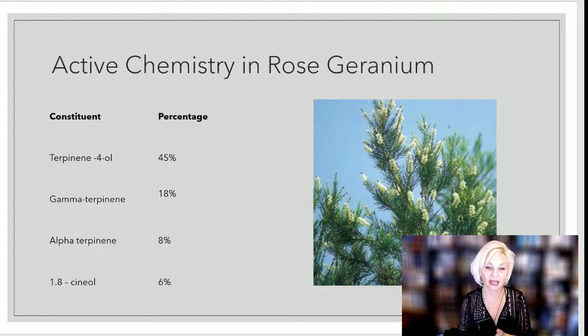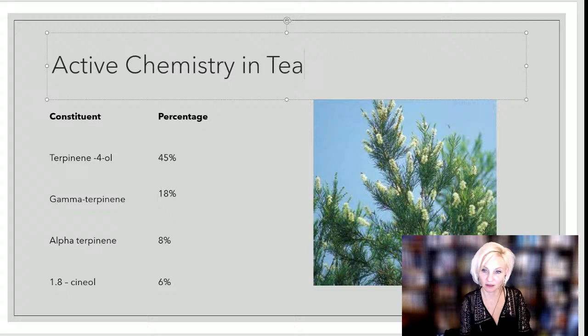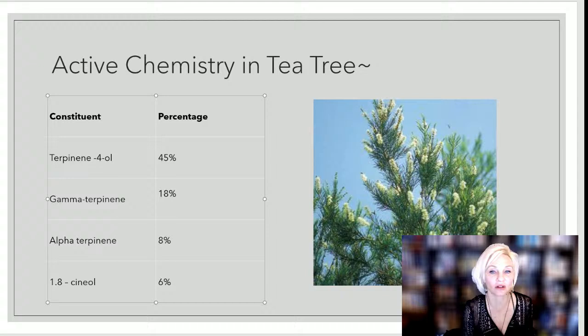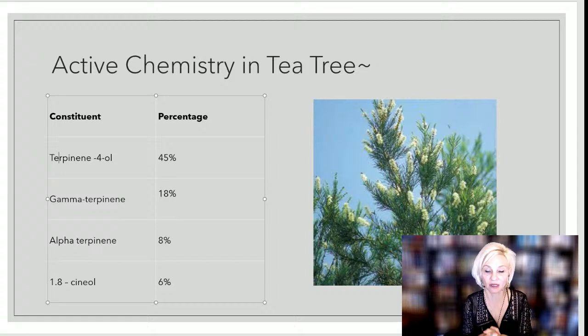The active chemistry in tea tree oil — the constituents are terpenes: gamma terpenes, alpha terpenes, and cineol. Cineol is one you'll also find in rosemary, so they blend well together if you want to combine them. About 45 percent of the oil is terpenes, which is where you get that pine-like scent from.